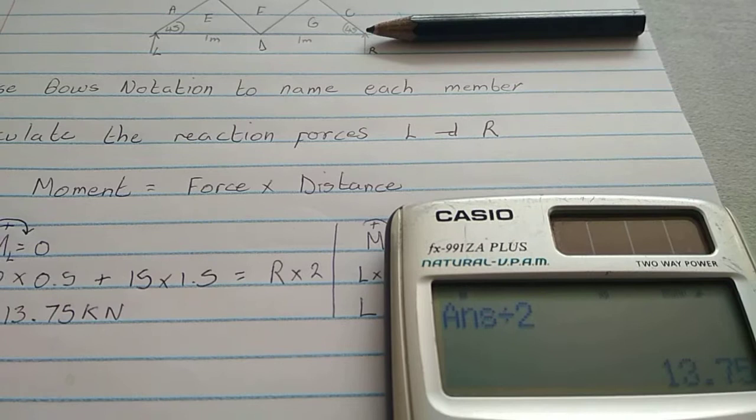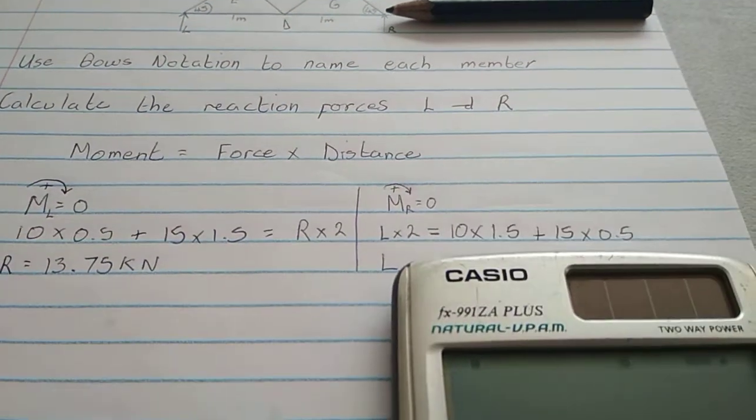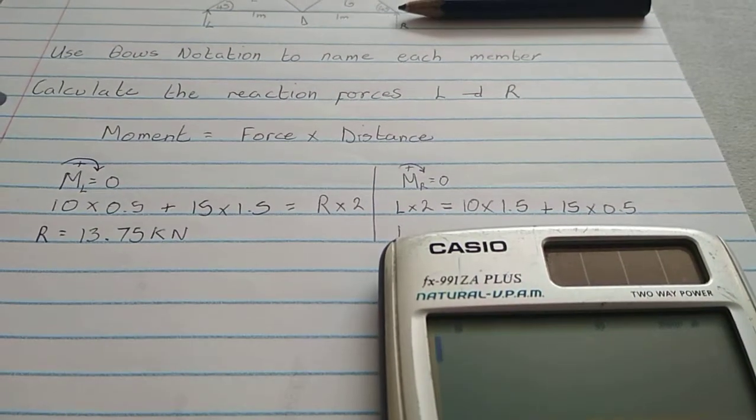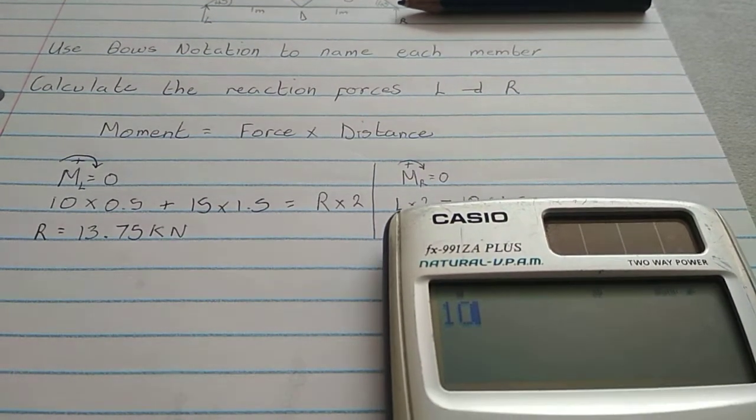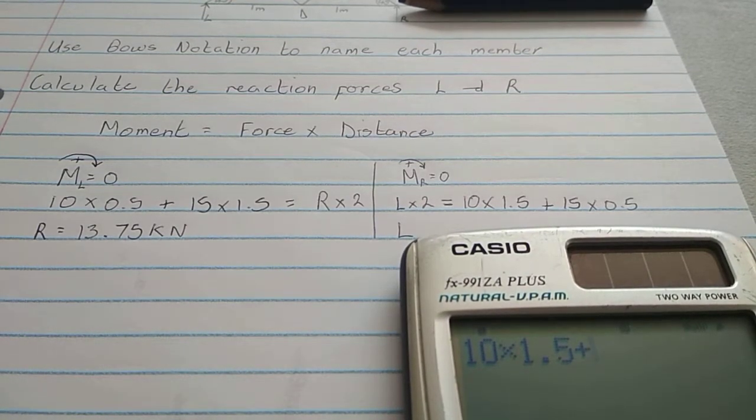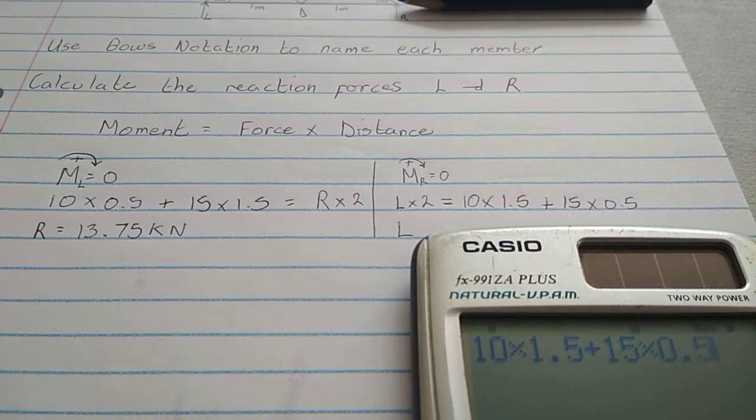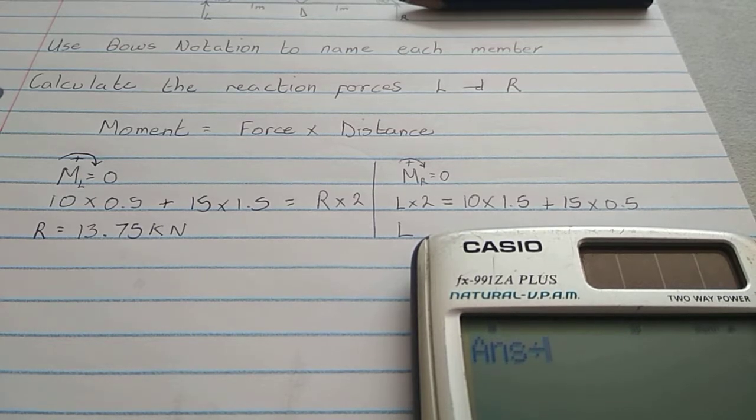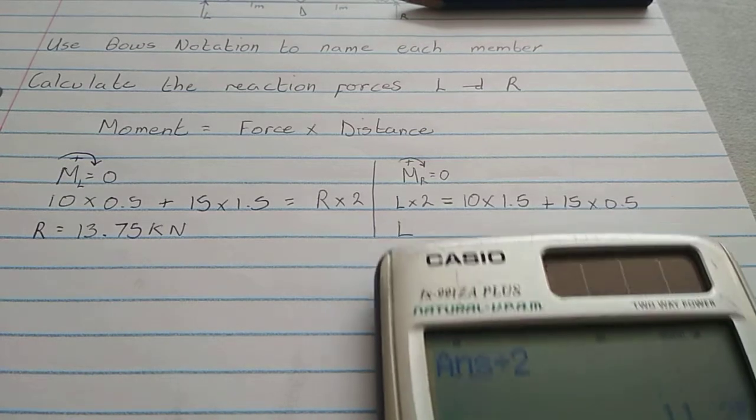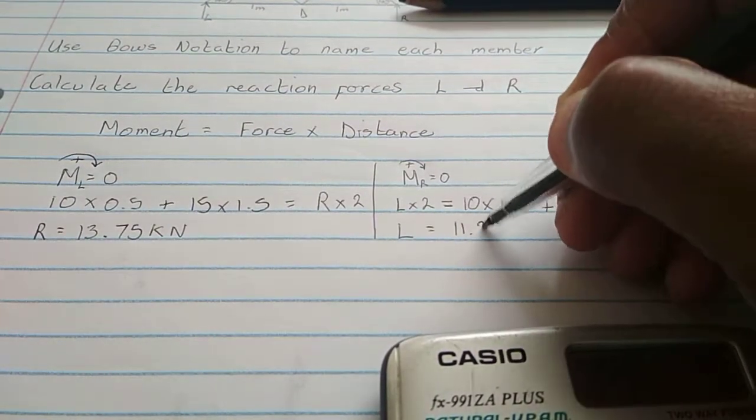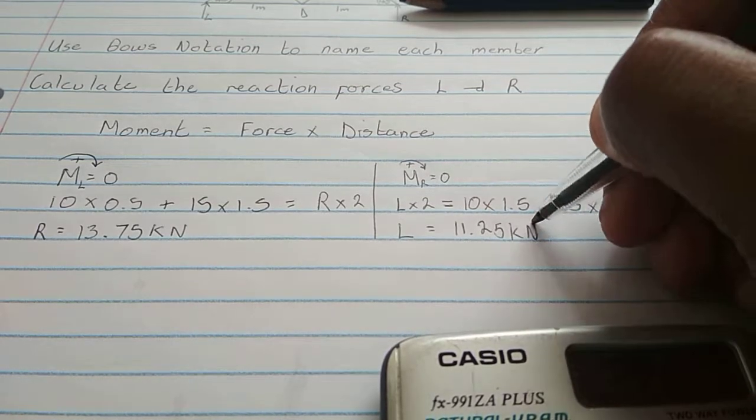Now, let's see what we get. So, we have 10 times 1.5 plus 15 times 0.5. Is equal to that. Divide by 2. And we get 11.25. So, L is equal to 11.25 kilonewtons.